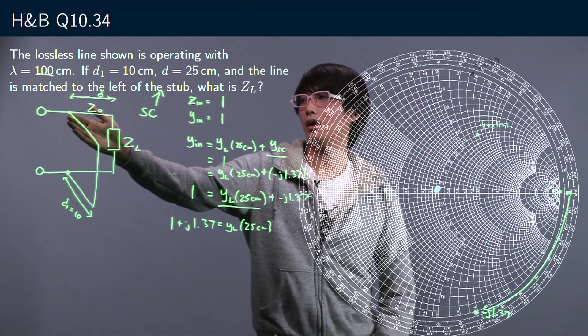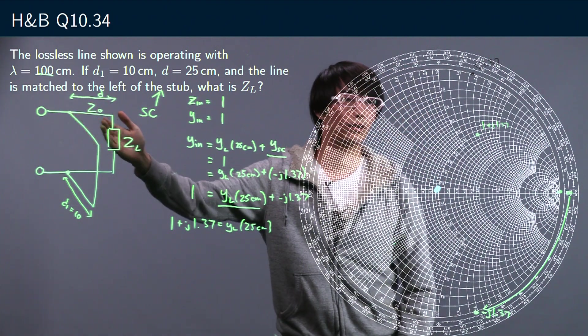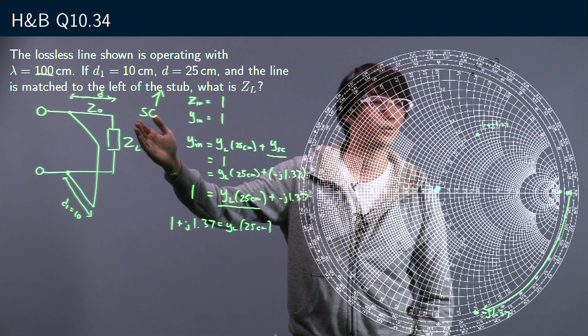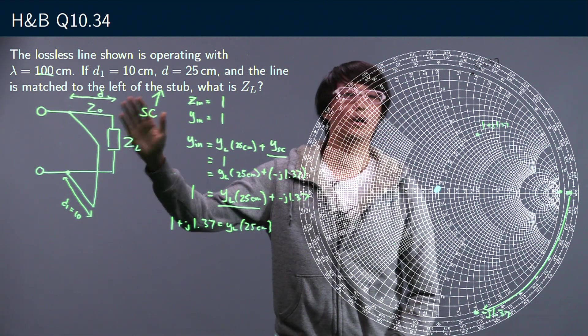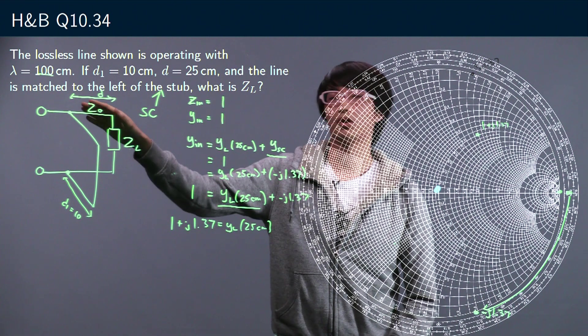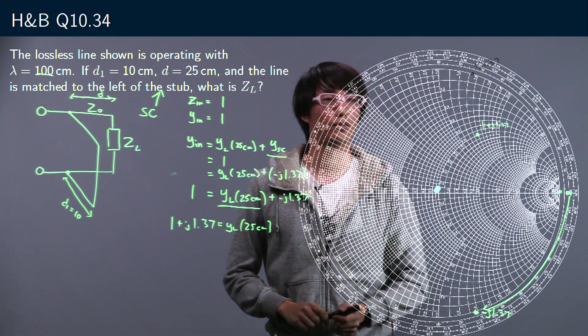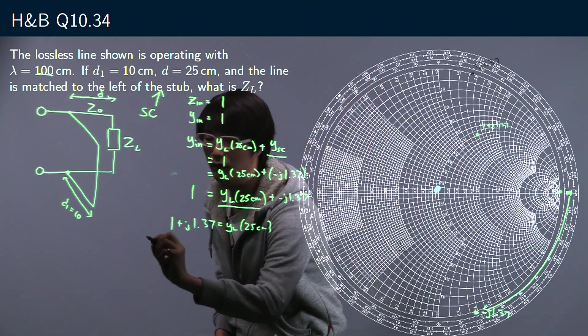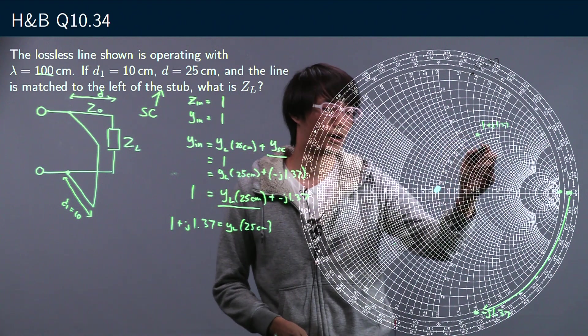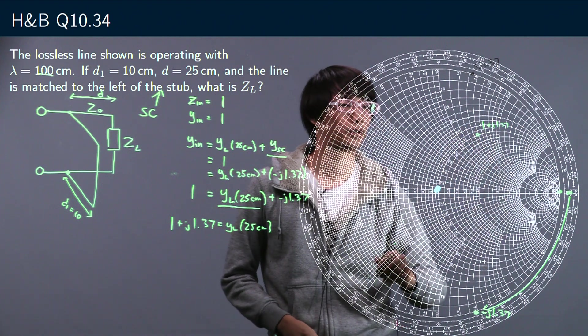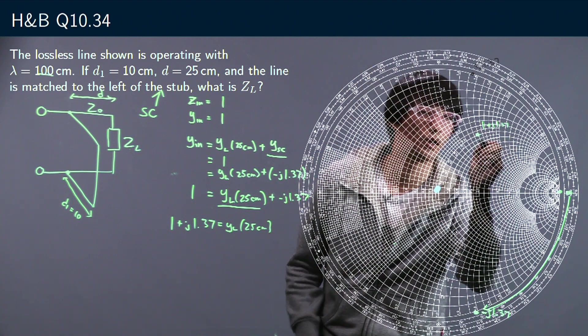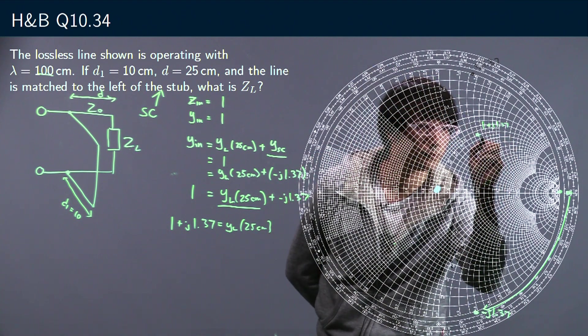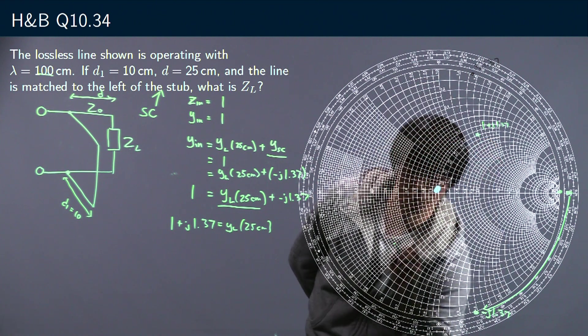We can move slowly towards our load to figure out what the input admittance at the load actually is. So we're going to move 25 centimeters. In terms of wavelengths that is 25 over 100, that is a quarter of a wavelength. A quarter of a wavelength is a half turn around the Smith chart because a full turn would be half a wavelength.